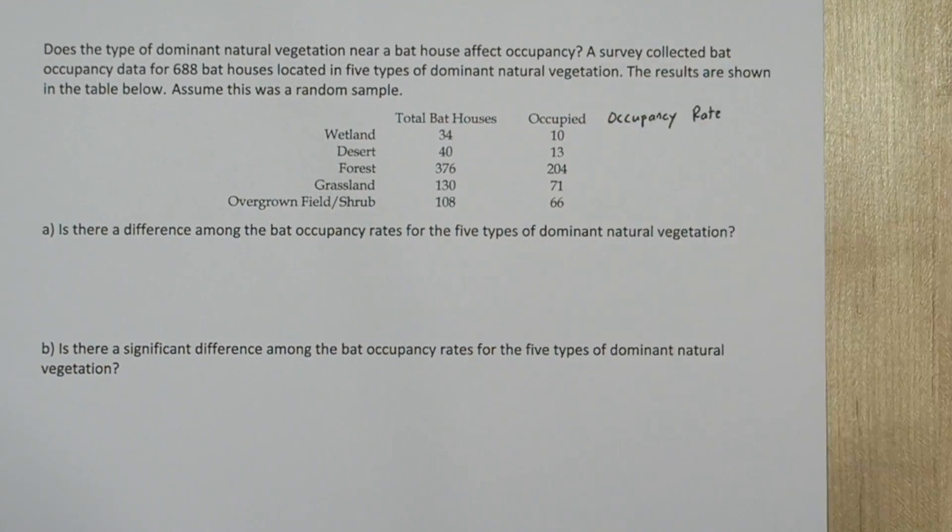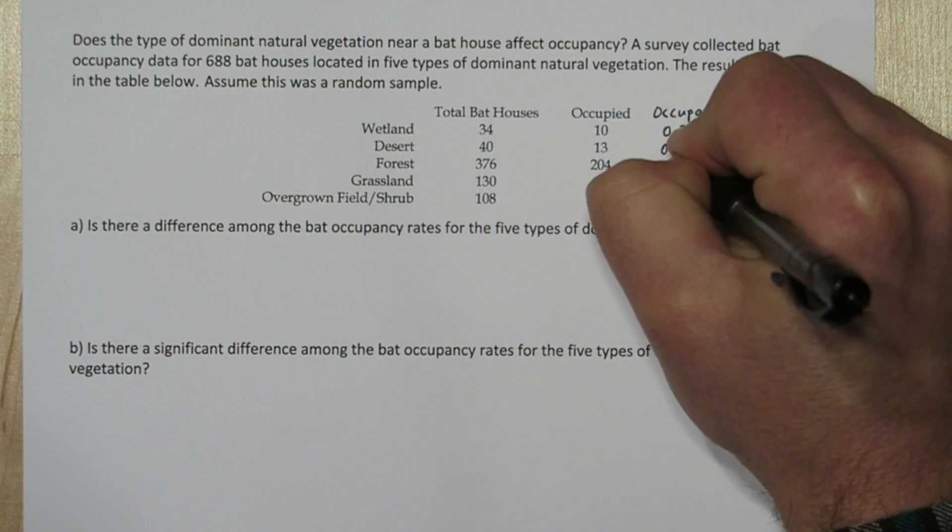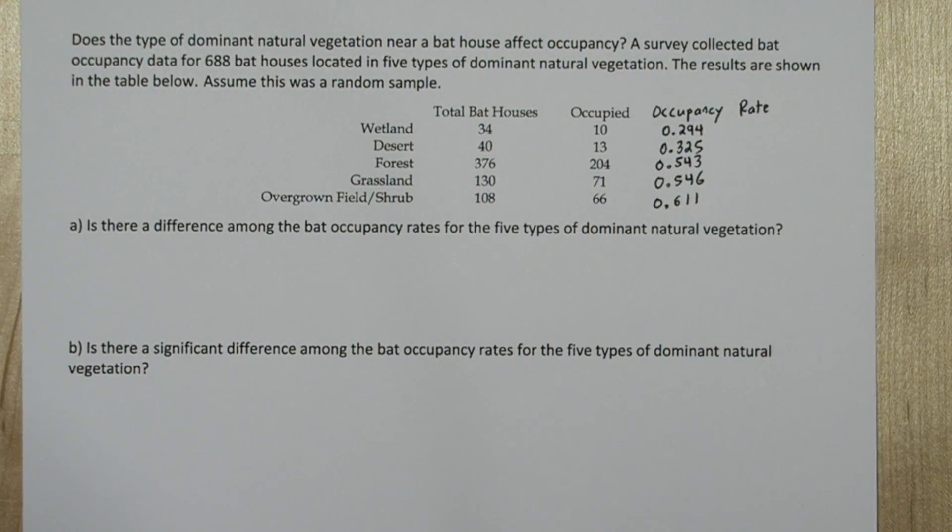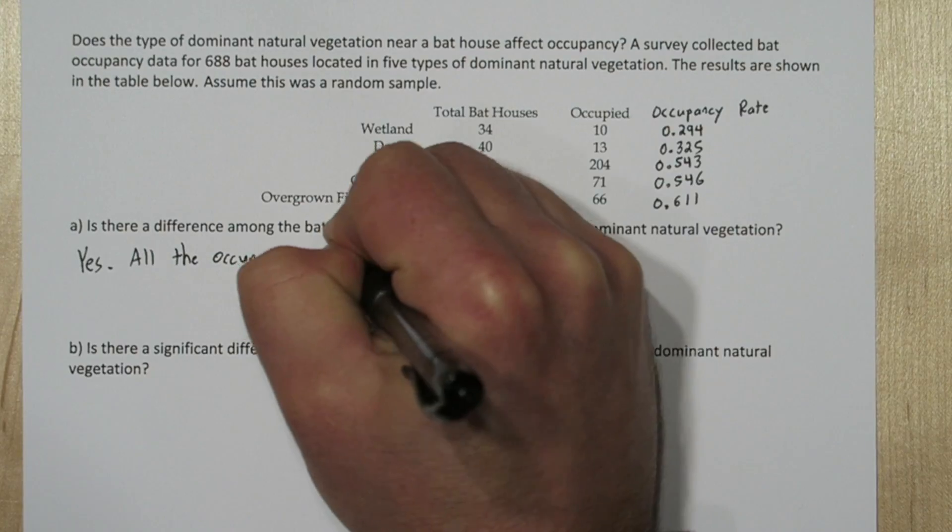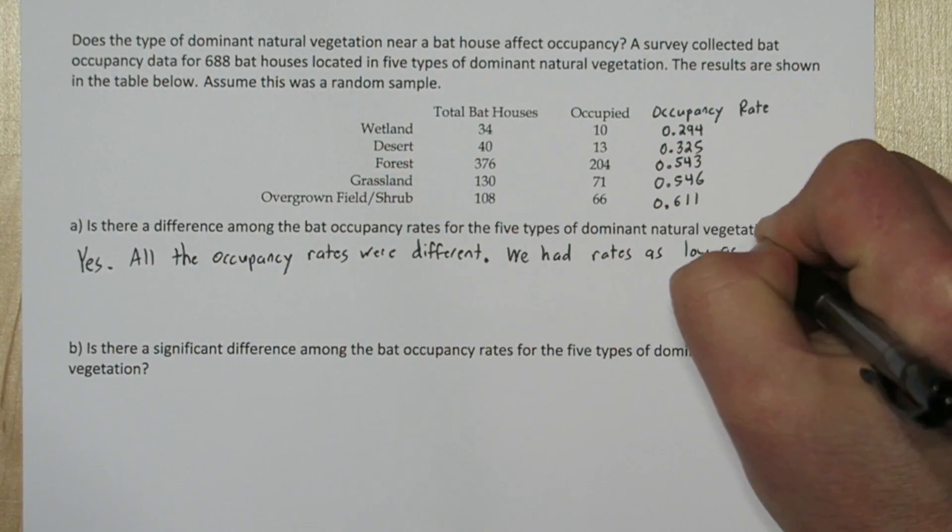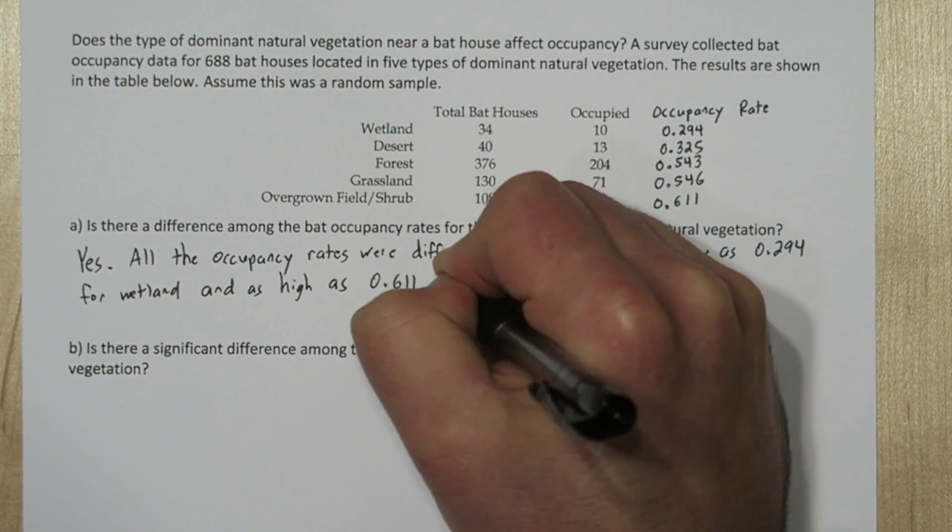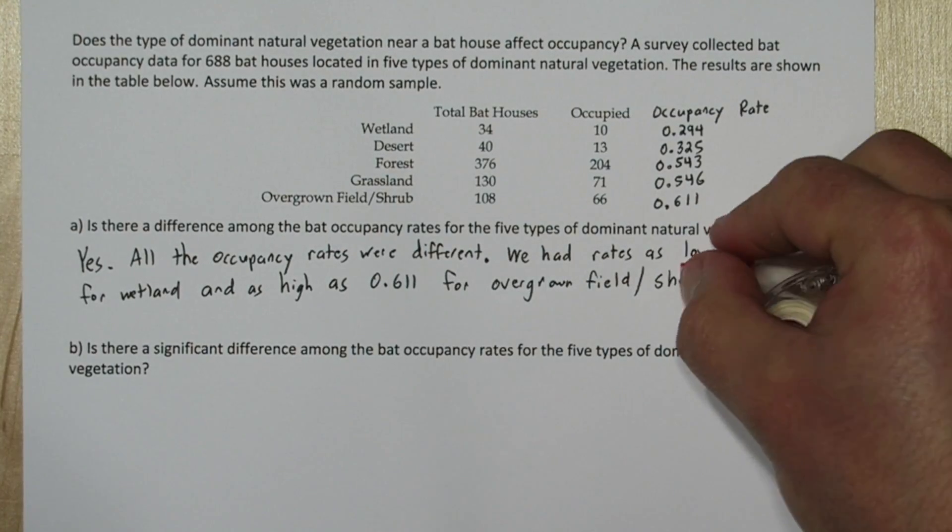So as we write these down, we can see that they are different. For part A, we'll answer YES. All the occupancy rates were different. We had rates as low as 0.294 for wetland and as high as 0.611 for overgrown field shrub.